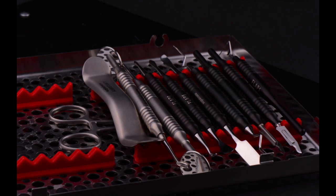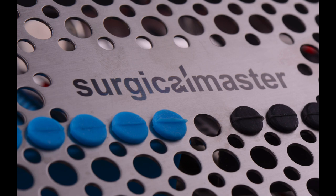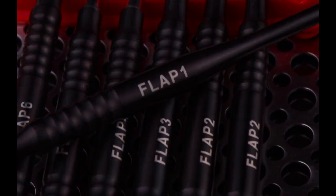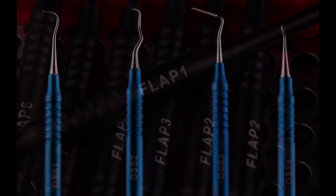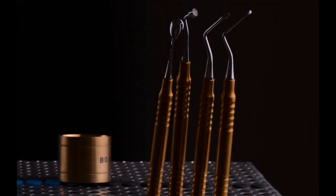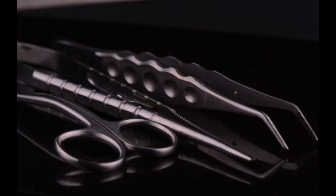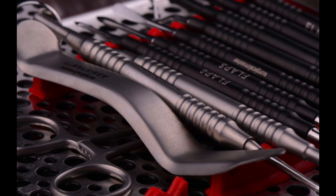It's also color-coded, so your assistant immediately knows which instruments to use. For example, the flap instruments are black, the osseous instruments are blue, bone grafting instruments are beautiful gold, the suturing instruments are shiny silver, and the assistant instruments are matte silver.